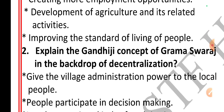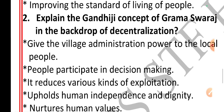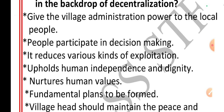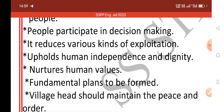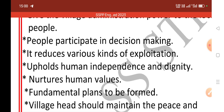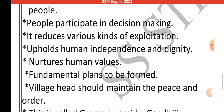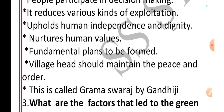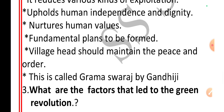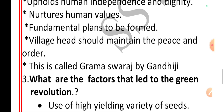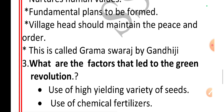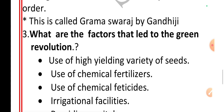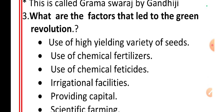Explain Gandhiji's concept of Grama Swarajya in the backdrop of decentralization. Give the village administration power to the local people. People participate in decision making. It reduces various kinds of exploitation. Upholds human independence and dignity. Nurtures human values. Fundamental plans to be formed. Village head should maintain peace and order. This is called Grama Swarajya by Gandhiji.